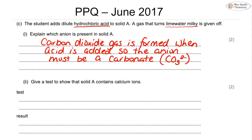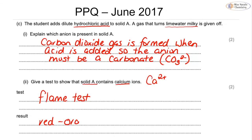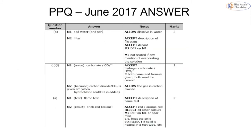To show that solid A contains calcium ions — calcium ions are cations, so we use the flame test. The question only asks us to name it, not describe it fully. The result will be an orange-red colour, and that would get two marks. Those are the answers to the June 2017 past paper questions.